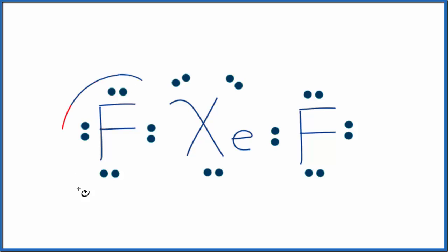You notice that the fluorines both have an octet - they have eight valence electrons. The central xenon has more than eight. That's okay, it is an exception to the octet rule. It can have more than eight valence electrons. We also don't really expect xenon to bond - it's a noble gas - but there are instances where it will form bonds, and XEF2 is one of those instances.